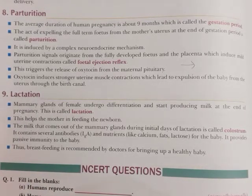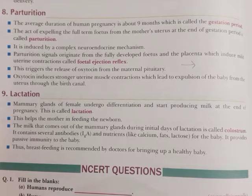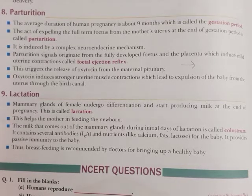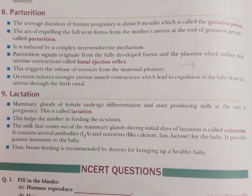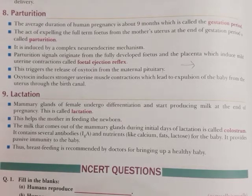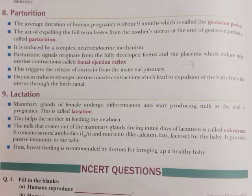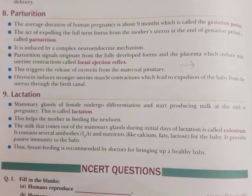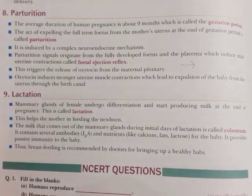In this process, the pituitary gland starts secreting oxytocin — specifically the maternal pituitary gland. Oxytocin is the birth hormone, and it also causes the myometrium to contract.